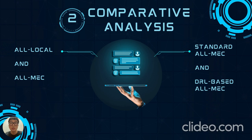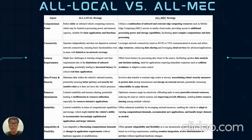In our comparative analysis, we have three task offloading strategies within the IOV: all-local, standard all-MEC, and DRL-based all-MEC. All-local emphasizes onboard processing for vehicle autonomy, enabling functions without external connectivity. Conversely, all-MEC uses nearby MEC servers for faster data processing, ideal for real-time applications. While all-local ensures autonomy, it may struggle with complex tasks, whereas all-MEC optimizes resources by offloading tasks selectively, meeting latency needs and improving responsiveness. Factors like computing power and data privacy will also influence strategy choice.